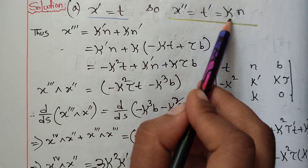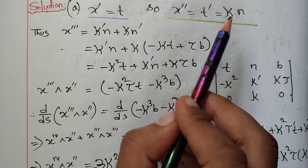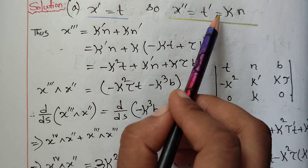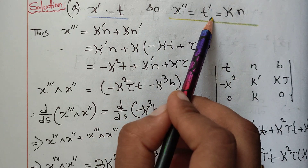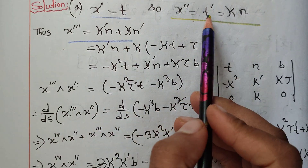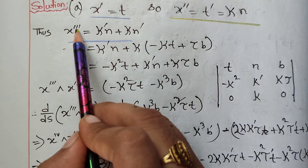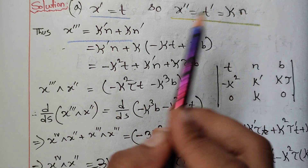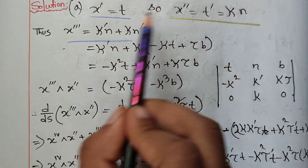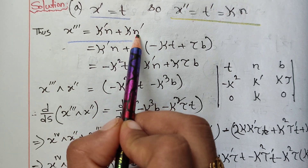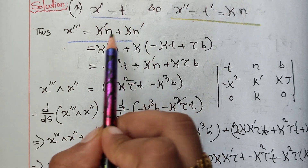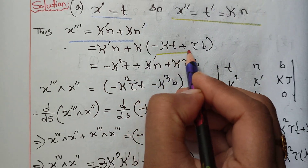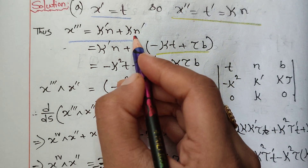t prime equals t prime. This is the derivative of t prime: x double prime, x triple prime, k·n. u·v should be equal to n. k·k prime, k·k·n. x double prime, n — u·v should equal n.